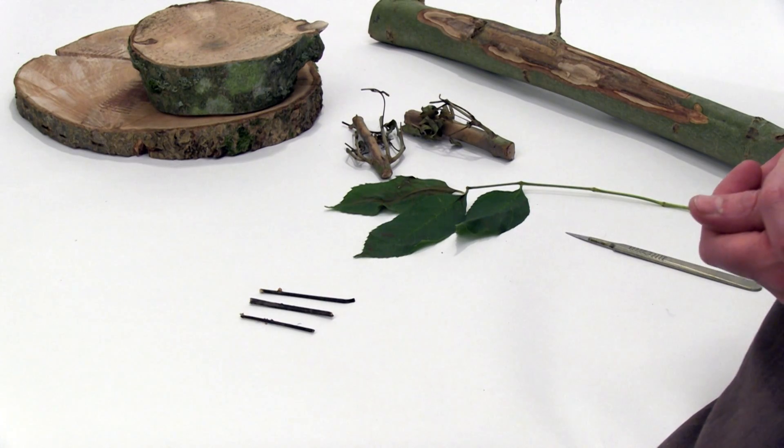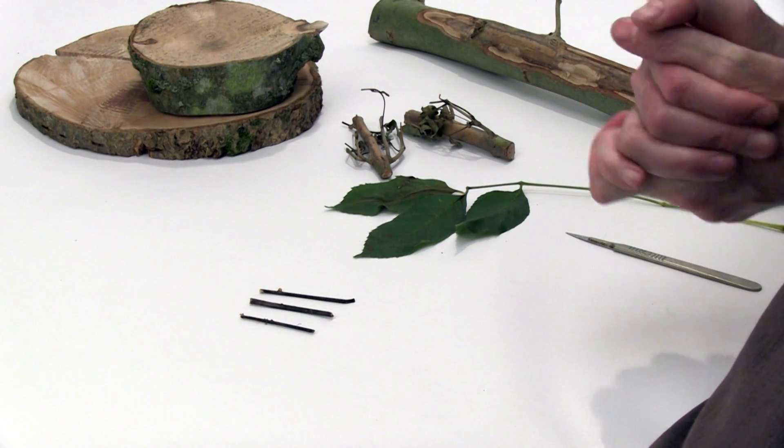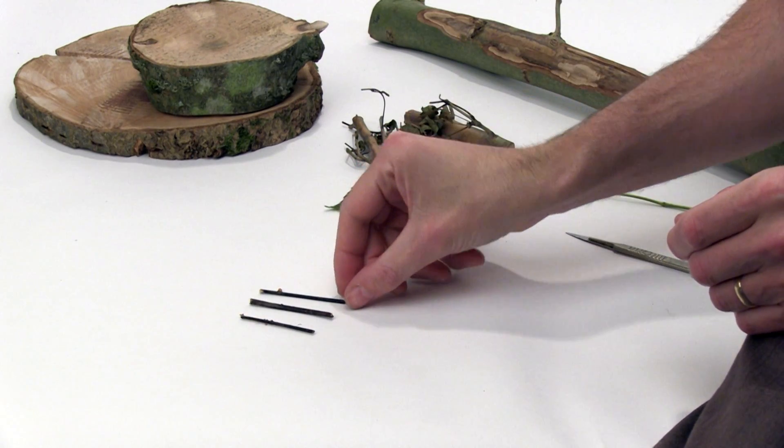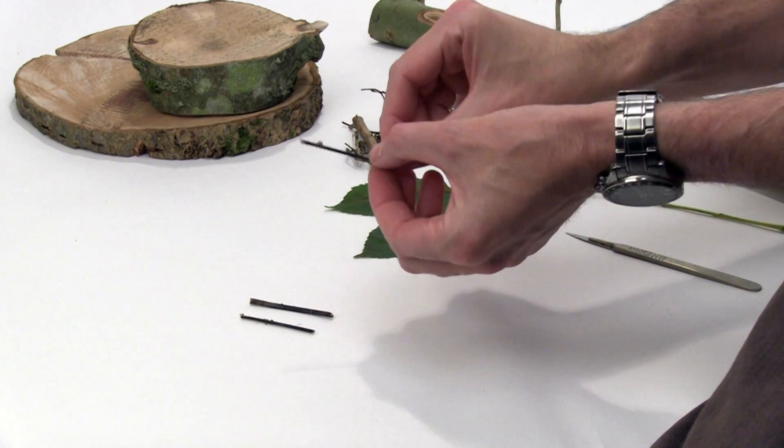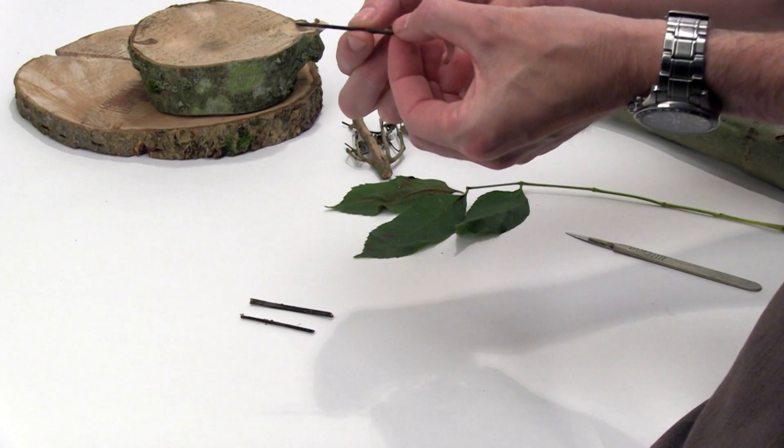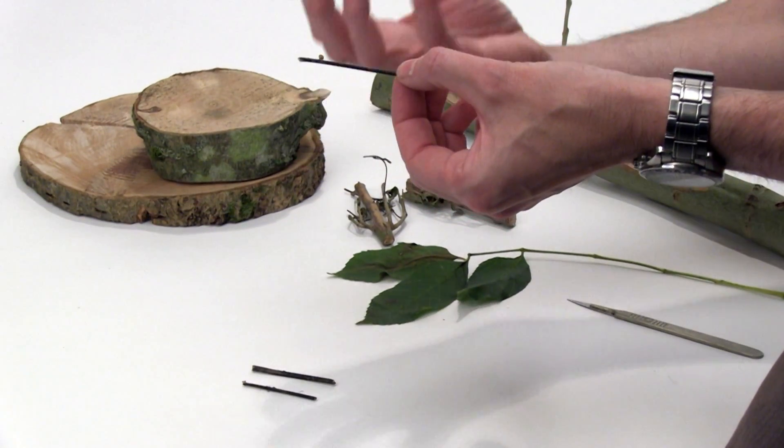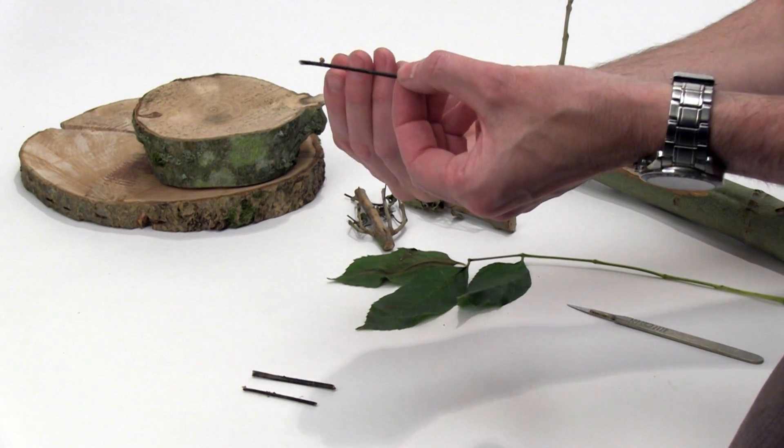In continental Europe, the sexual stage of the pathogen Hymenoscypha pseudoalbitus has actually been found, and it's been found growing out of the fallen leaves and rachises of the ash plants.